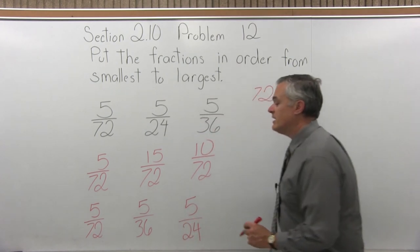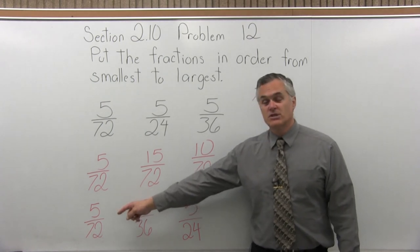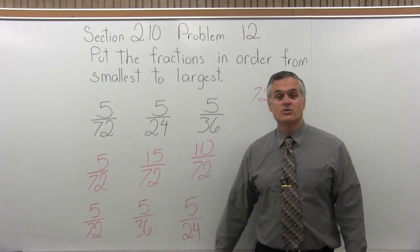So the fractions written in order from smallest to largest would start with 5 over 72, 5 over 36 would be next, and the last one would be 5 over 24.